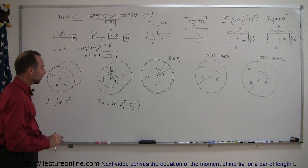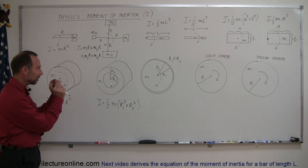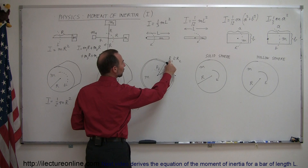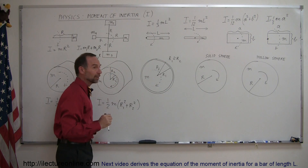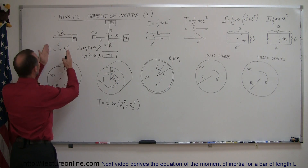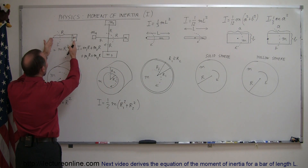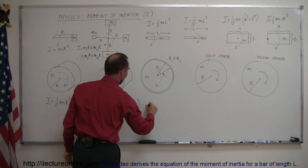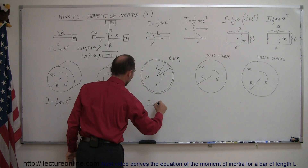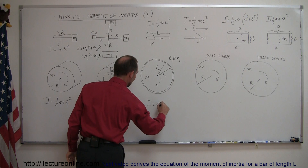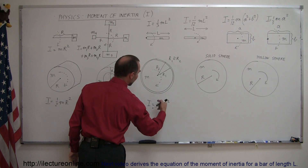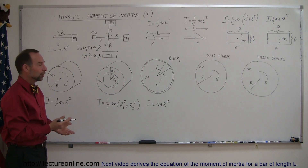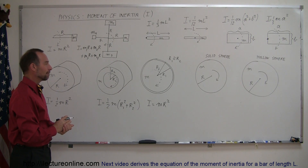Next we have a thin ring where the outer radius is virtually the same as the inner radius. Almost all the mass is distributed at a distance R from the point of rotation, so this becomes I = MR², where R represents both R1 and R2 since they are virtually the same.